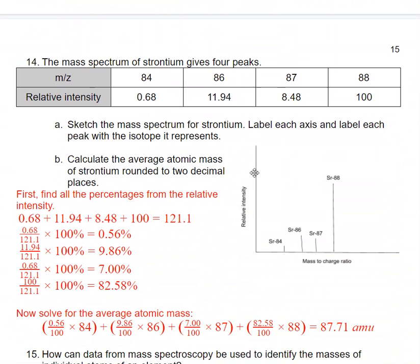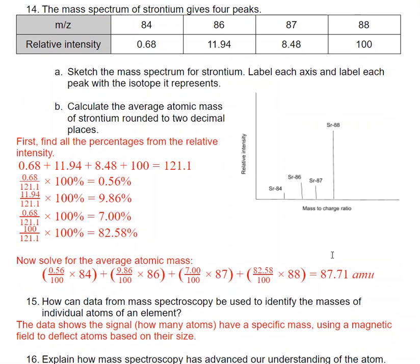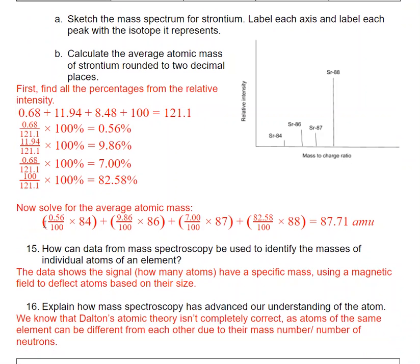Taking a look at strontium, there's four peaks. So here's my sketched diagram here. Notice that the relative height of these, the 8.4 one is much smaller than 8.6 and 8.7 are kind of close, but 88 is way higher. So first I want to convert the relative intensities into percentages. So I did that here. Now I want to solve for the average atomic mass, and this is what I get. So this matches what we see on the periodic table.